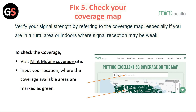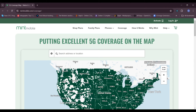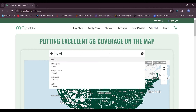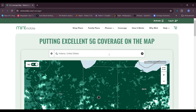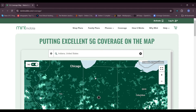Fix 5: Check your coverage map. Verify your signal strength by referring to the coverage map, especially if you are in a rural area or indoors where signal reception may be weak. To check coverage, visit the Mint Mobile coverage site and input your location — available coverage areas are marked in green.